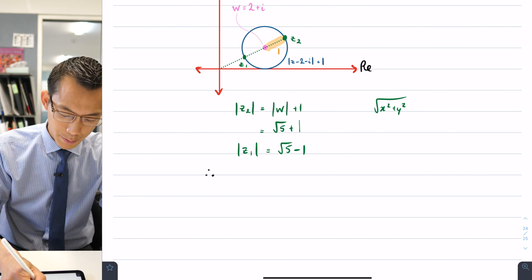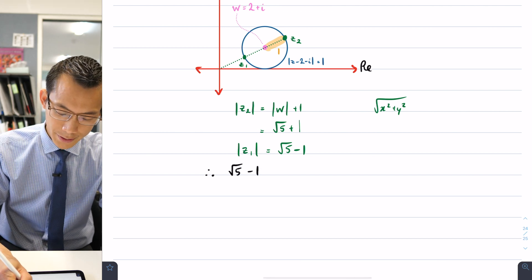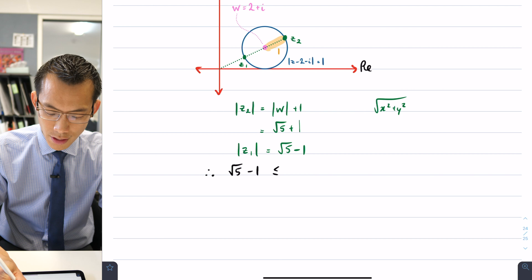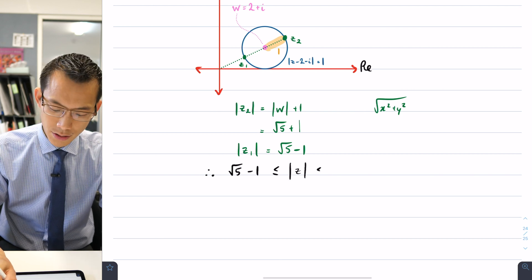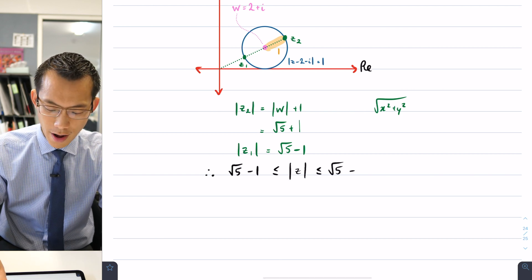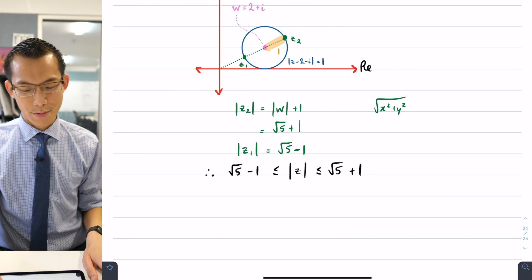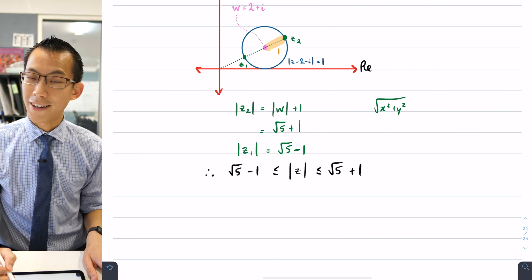I can say therefore here comes the minimum: square root of five minus one is less than or equal to the modulus of z which is less than or equal to square root of five plus one that was the maximum that I determined up here.